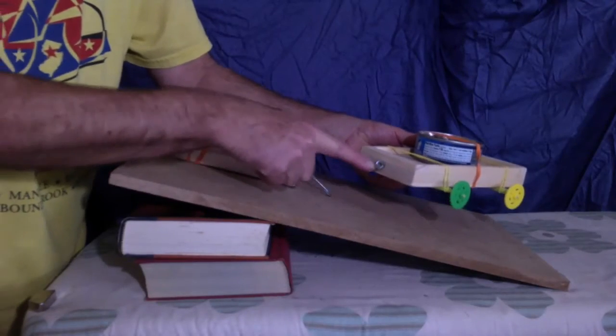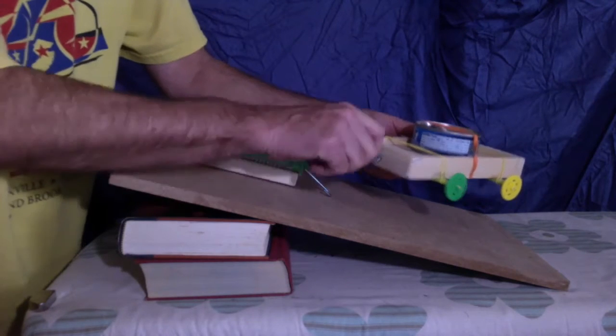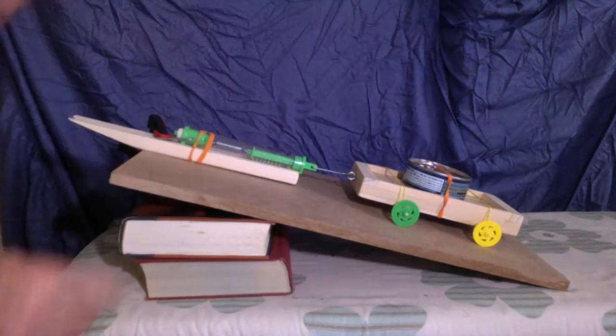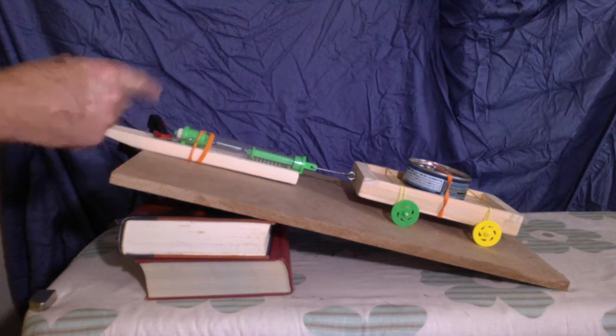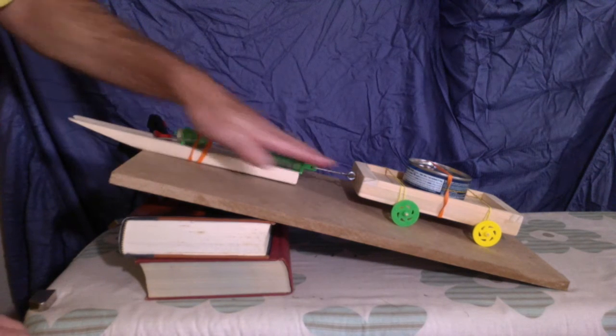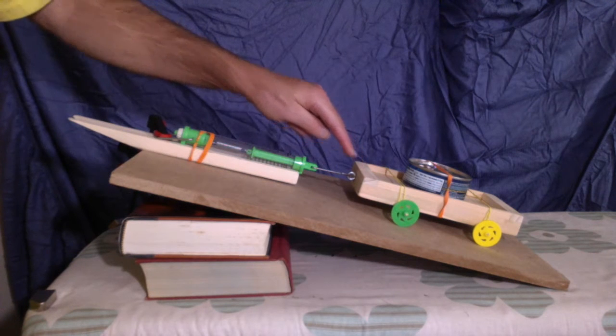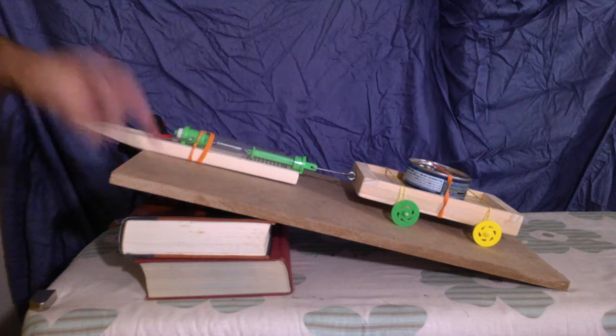We're going to put the spring scale on the eye hook. Do not mess with this eye hook. Now why is this spring scale rubber banded to this block of wood? So that the spring scale pulls at the same height as the block of wood is from the ramp.